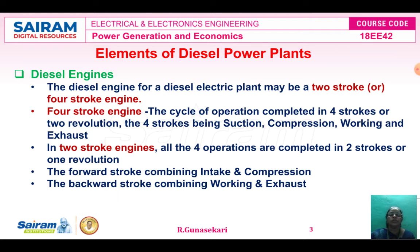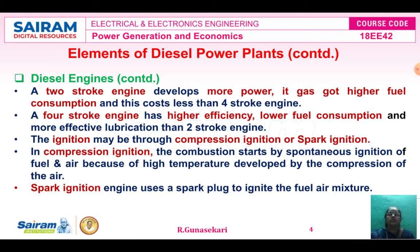In a two-stroke engine, the four operations are completed in two strokes or one revolution. The forward stroke combines intake and compression; the backward stroke combines working and exhaust stroke. The two-stroke engine develops more power; however, it has higher fuel consumption and costs less than the four-stroke engine. The four-stroke engine has higher efficiency, lower fuel consumption, and more effective lubrication than the two-stroke engine.